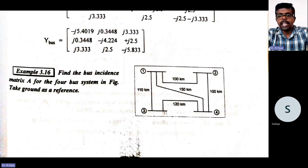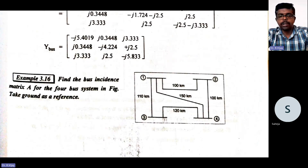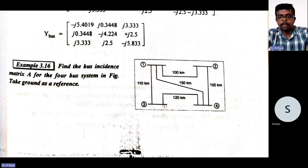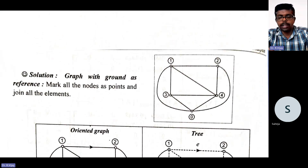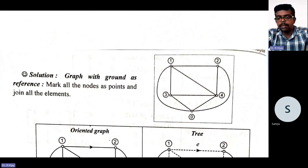The first step is we need to construct the graph. For the bus incidence matrix, the first step is to construct that graph. So the graph will be framed with the connections: 1, 2, 3, 4 are joined, and 1 and 4 join. Also, 1 to 0 is joined, and 2 to 0 is joined — taking ground as reference.